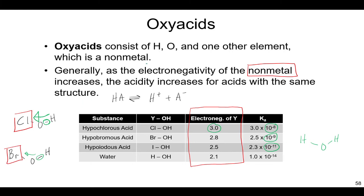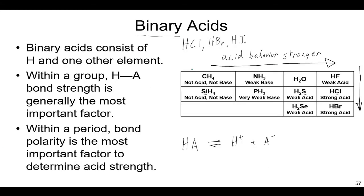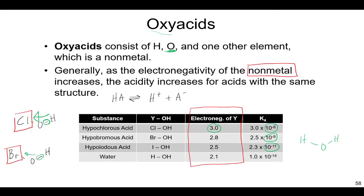So we're comparing oxyacids with the same structure — this may not apply when you get to other oxyacids with different structures. That's an oxyacid: it has H with an oxygen plus some other element. So we have binary acids, and we have oxyacids.